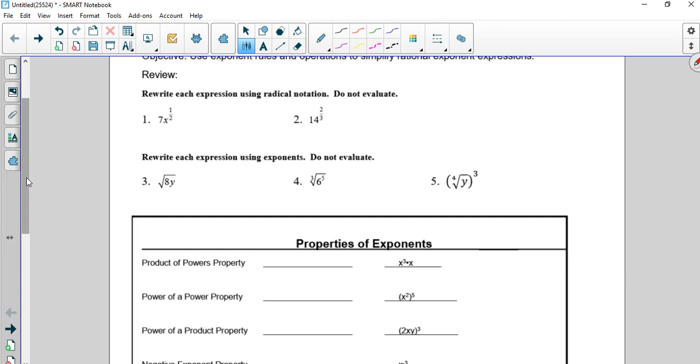7x to the 1 half. Remember, 1 half means the square root, so that's the square root of x. There's where the 1 half comes from. The 7 is on the outside. Notice that the 7 is not inside. For it to be inside, it would have to be like this. That is telling us the entire 7x is being raised to the 1 half, and therefore it's the square root of 7x.